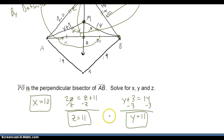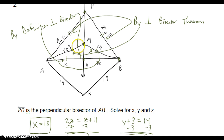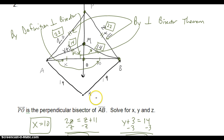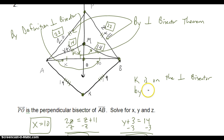That looks a bit odd — how can y and z both be 11 if one length appears much longer than the other? Well, z is not the entire length; the entire length is 2z, which is 22 — it's 11 plus 11. And looking at the other length, it's not 11; it's 11 plus 3, so it's actually 14, which matches the other side being 14. Finally, point K is equidistant from endpoints A and B, which means K is on the perpendicular bisector by the perpendicular bisector converse. If we extended line PO down to K, K would be on the perpendicular bisector.